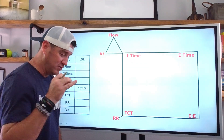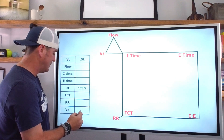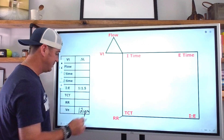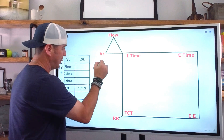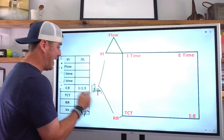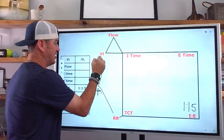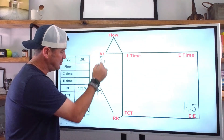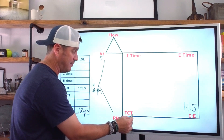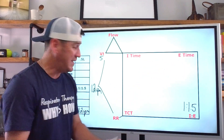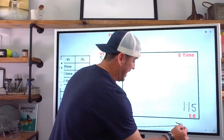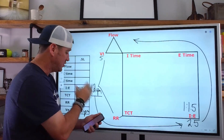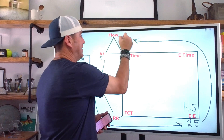One more example. This time we know minute ventilation — let's say 12 liters per minute. Our I-to-E is still 1 to 1.5, and tidal volume is 0.5. We can do this multiple ways. We could use tidal volume and minute ventilation to get respiratory rate, then use I:E to get I-time. Or we could say 12 liters per minute times 2.5 total parts gives us our flow. Let's do it that way: 12 times 2.5 equals 30 liters per minute.